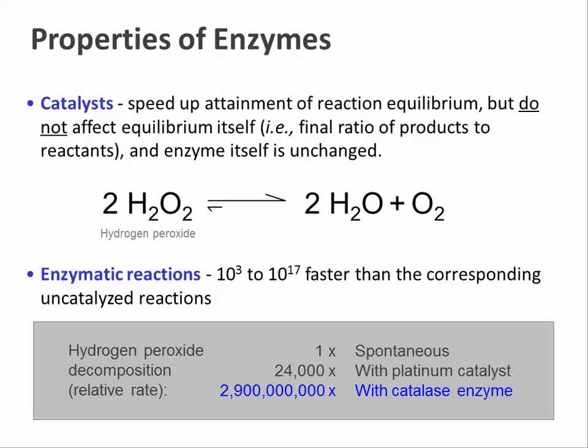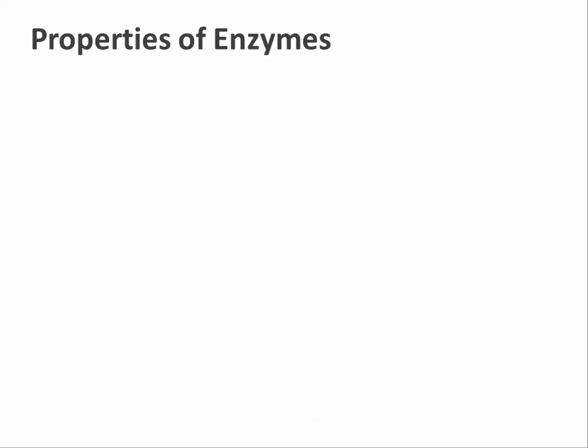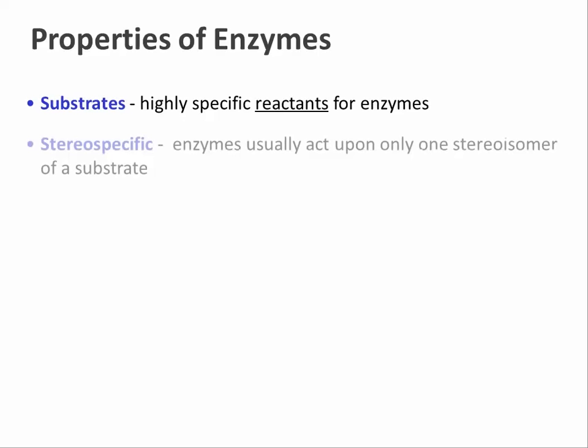Compared with chemistry in the test tube, enzymes have further properties that are pretty amazing. The majority of enzymes are quite particular in what substrates they accept, so they only feed specific reactants into a process. Enzymes are always stereospecific. From a chemical point of view, two enantiomers — two mirror images of one molecule — behave exactly the same way. So spontaneous reactions of chiral molecules happen at the same rate, and if an achiral molecule becomes chiral in a spontaneous reaction, both stereoisomers are formed.